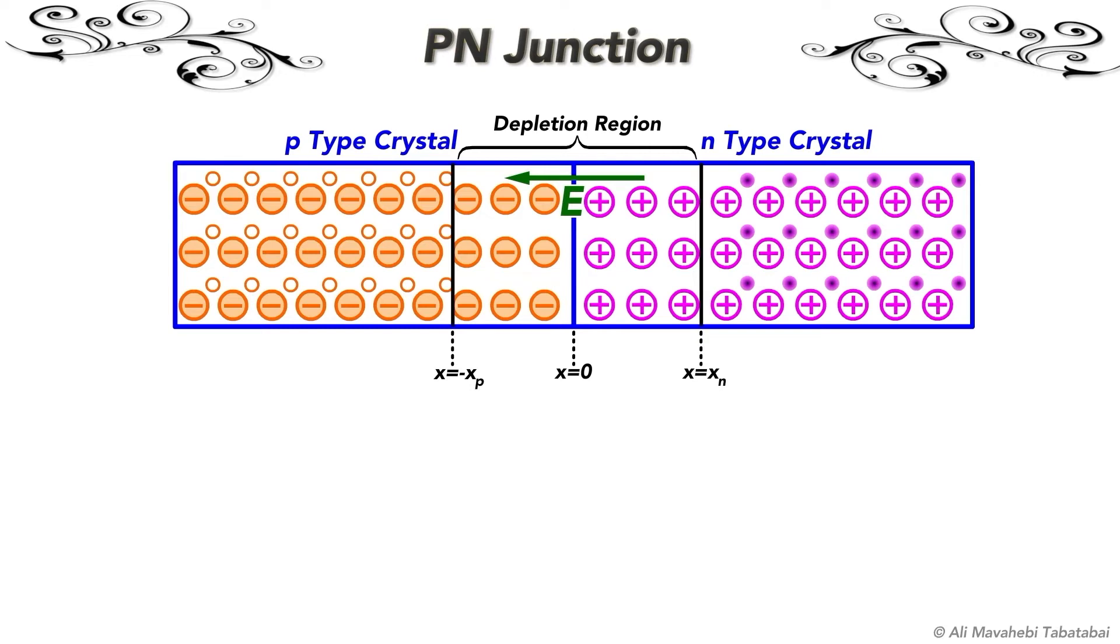Now let's take a look at different graphs which describe characteristics of the p-n junction. The first graph indicates the carrier concentration of the p-n junction. As discussed earlier, in the p-side, majority carriers are holes and minority carriers are electrons.